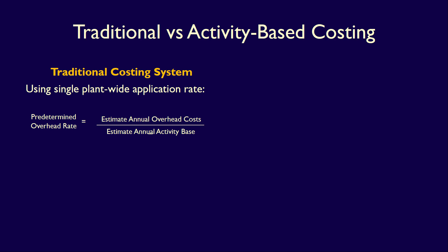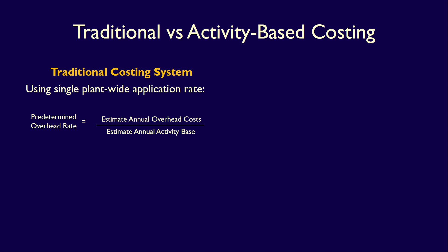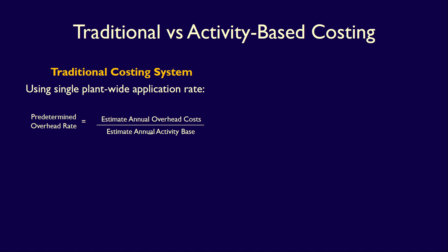Remember, the activity base is chosen because it relates to the cost in the cost pool — it causes those costs to change. When the cost pool is so large and many different activities are accumulated into one cost pool, it's possible that one activity base is no longer enough. We know that when the manufacturing process is simple and one activity base appropriately reflects the costs in the manufacturing cost pool, the traditional costing system works well. However, manufacturing has experienced huge changes with advances in computerized systems, technological innovation, global competition, and automation. One plant-wide rate is unlikely to appropriately allocate manufacturing overhead to today's products. Using the wrong application rate can have serious implications, such as over- or under-costing and therefore over- or under-pricing, with serious consequences for the company's ability to survive and thrive.